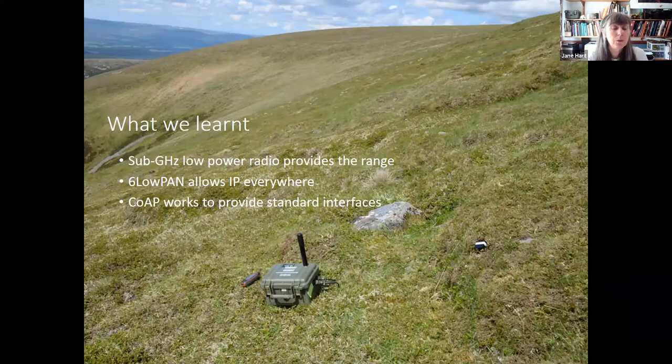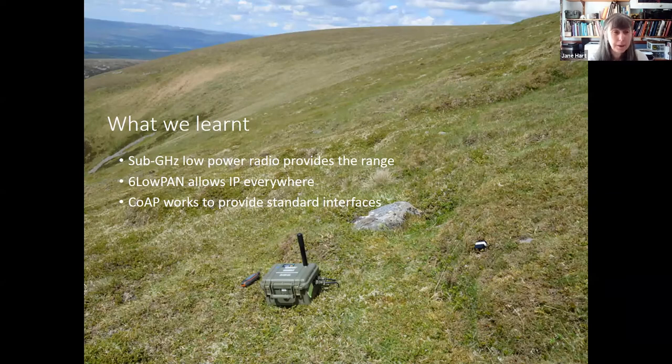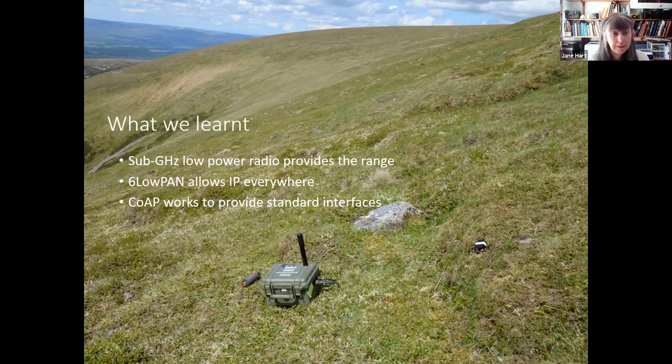So the great thing about this system is that it did work. So what we learned? Well, we learned that sub gigahertz low power radios are sufficient to provide the range and that 6LoWPAN provides internet protocols everywhere. And we were able to use this CoAP to provide standard interfaces. So essentially, we managed to get an Internet of Things system working up on the Cairngorm plateau.